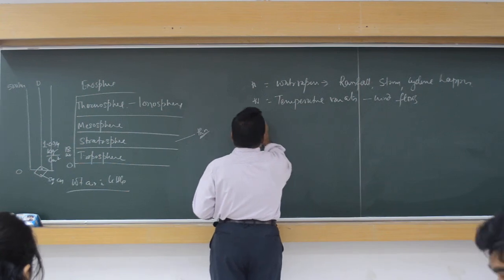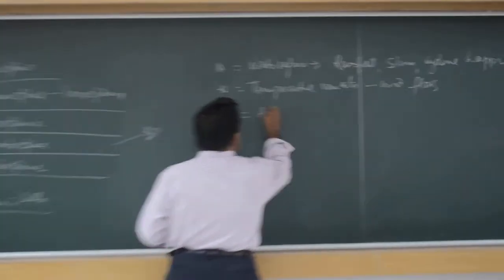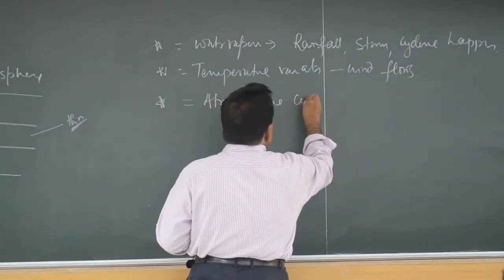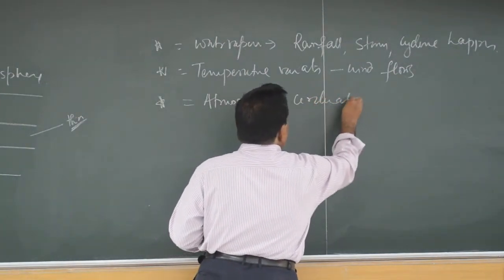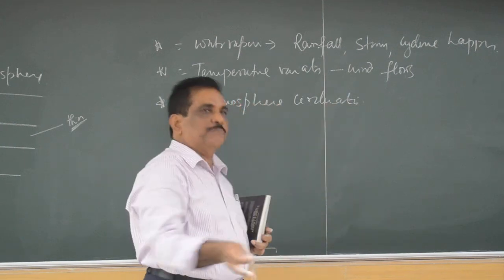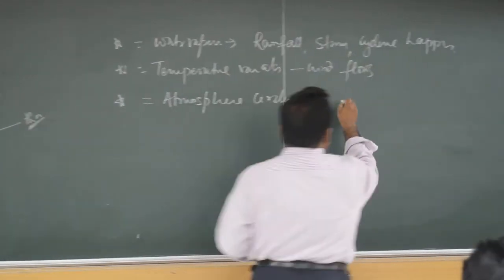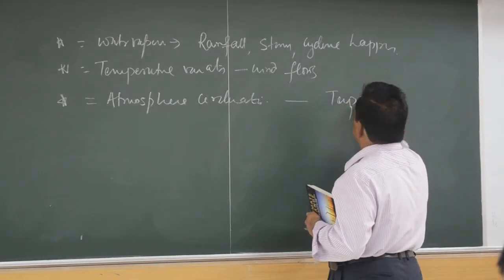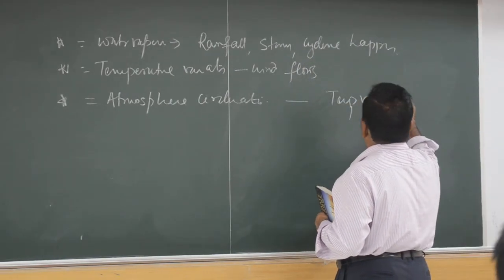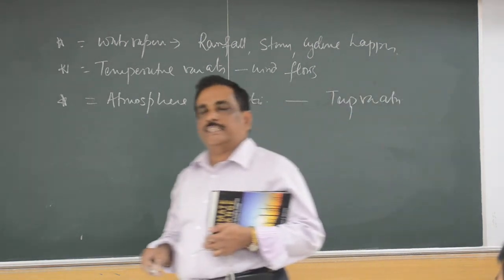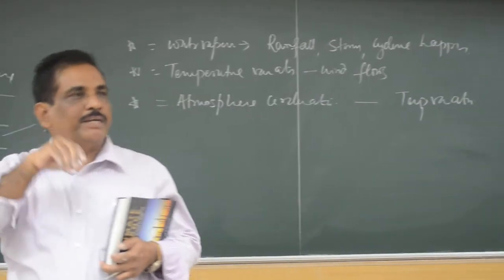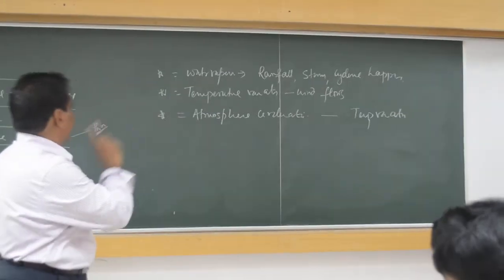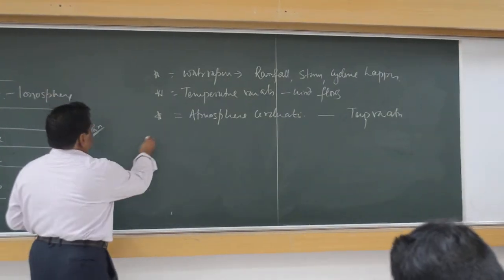We will see how the atmospheric circulation takes place in the subsequent classes. Atmospheric circulation — that means movement of the wind — takes place because of this temperature variation. We will read in the next class how wind circulation takes place, the different types of wind movement, and different types of atmospheric pressure.